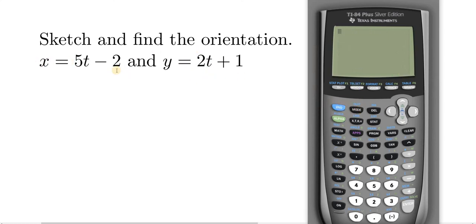So now we have to enter these into our calculator, so we're going to click y equals, perfect, and now we're in parametric mode, so x is 5t minus 2, so it's just 5, and then just hit the variable key, that should give you the t, minus 2, then just hit enter, and the second one is 2t plus 1, then you hit enter.